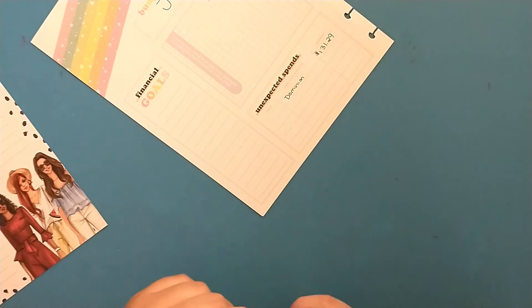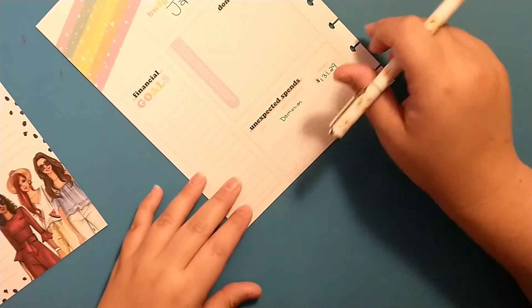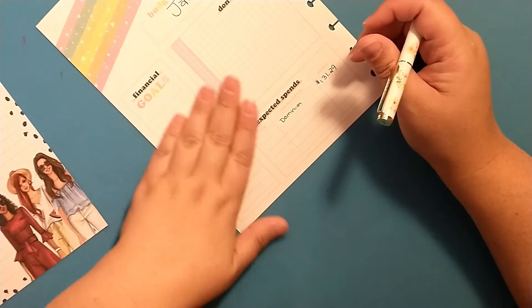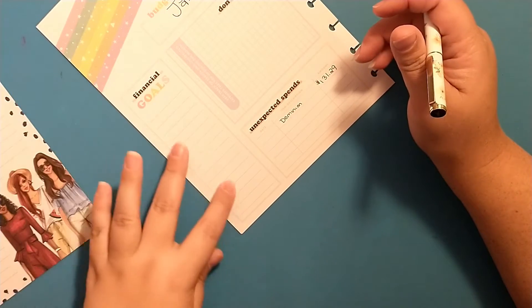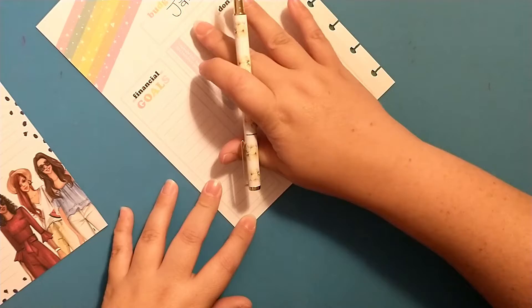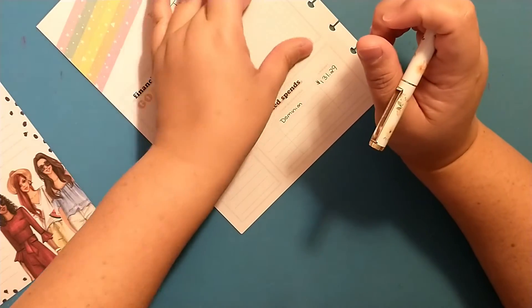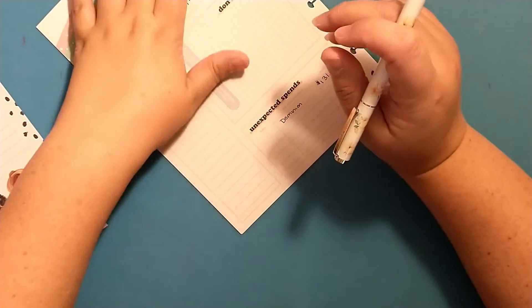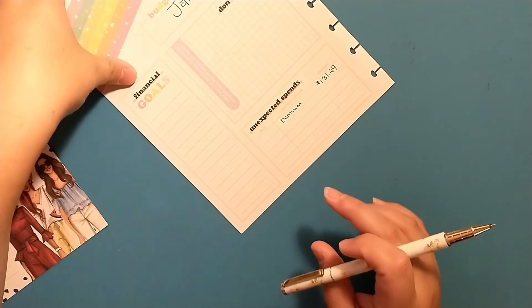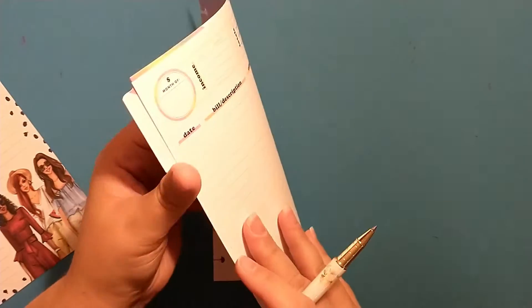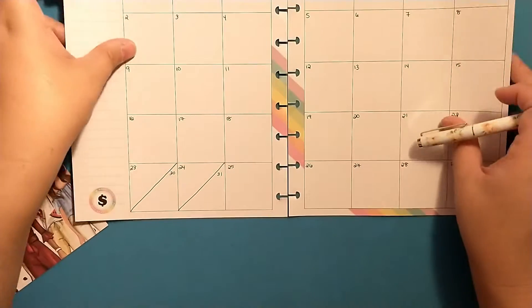So here, this is sort of like your dashboard and you can write your financial goals here. This could be don't forget, or this could be you could use this to decorate, but I'm going to leave this part blank for now and set that aside.